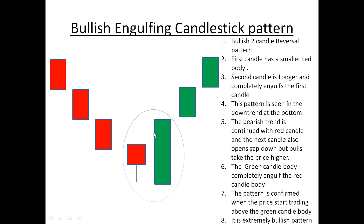This pattern is normally seen after the downtrend is over, or at the bottom of the downtrend. The bearish trend continues with the red candle, and the next candle also opens gap down, but the bulls take the price higher.